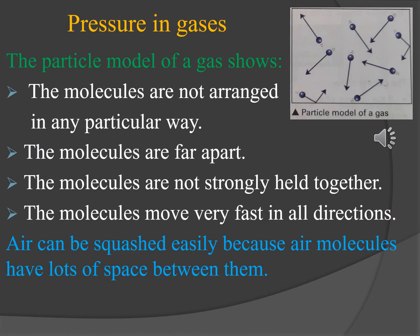Our next topic is pressure in gases. This diagram shows the particle model of a gas. The particle model shows: 1. The molecules are not arranged in any particular way. 2. The molecules are far apart. 3. The molecules are not strongly held together. 4. The molecules move very fast in all directions. Air can be squashed easily because air molecules have lots of space between them.